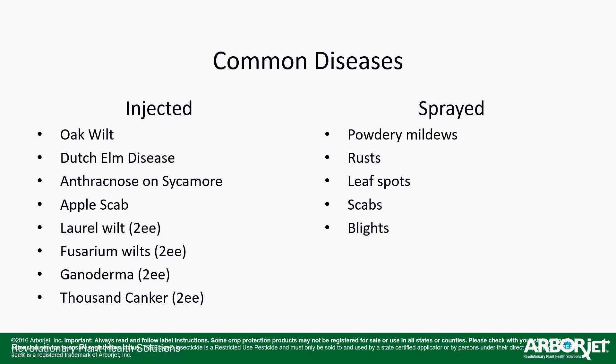Common applications and diseases: this is injected for oak wilt, Dutch elm disease, sycamore anthracnose, and apple scab on ornamental apple trees — mainly crab apples. The 2EE, which is a secondary label additive, covers laurel wilt, fusarium wilt, ganoderma on palms, and thousand canker. If it's sprayed, it's quite effective against powdery mildew, rusts, leaf spots, scabs, blights, and turf anthracnose. For sycamore anthracnose, injection is preferred, but for turf anthracnose this will be quite effective as a spray.